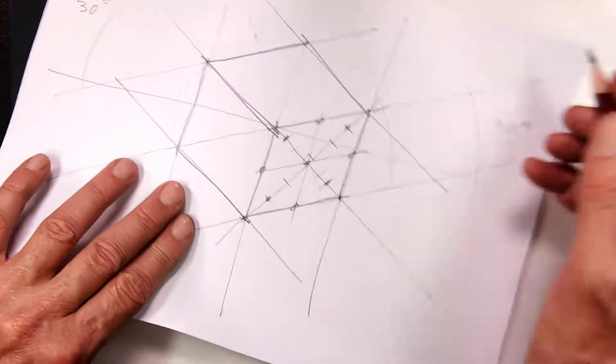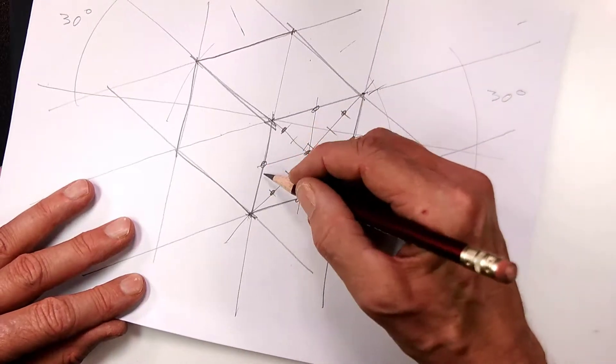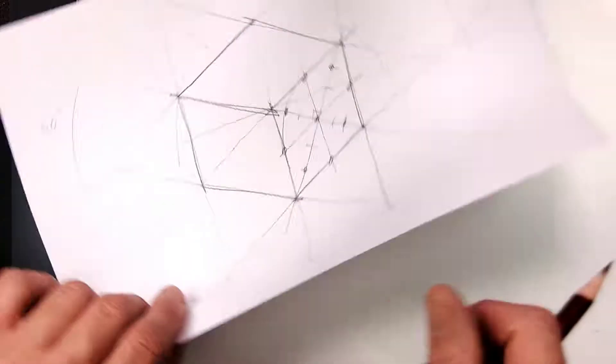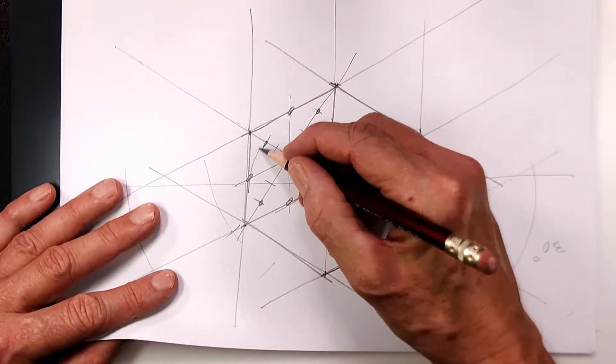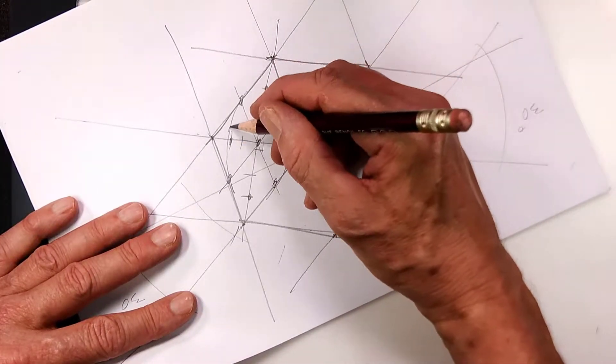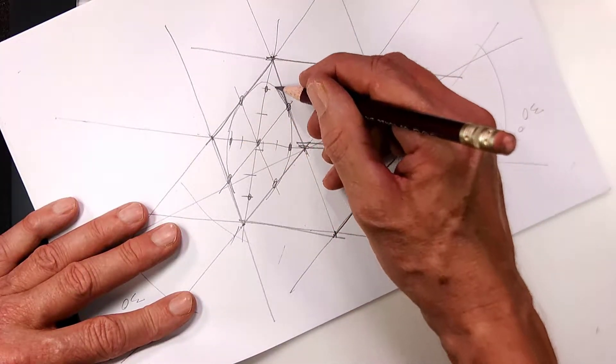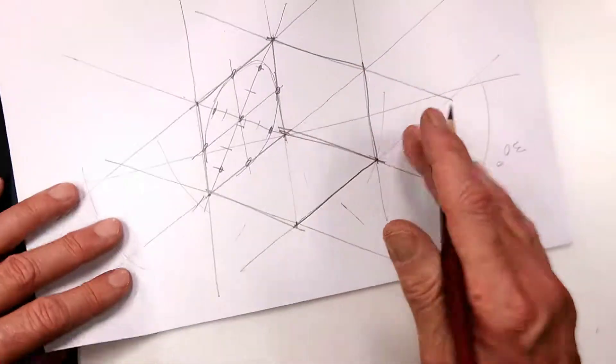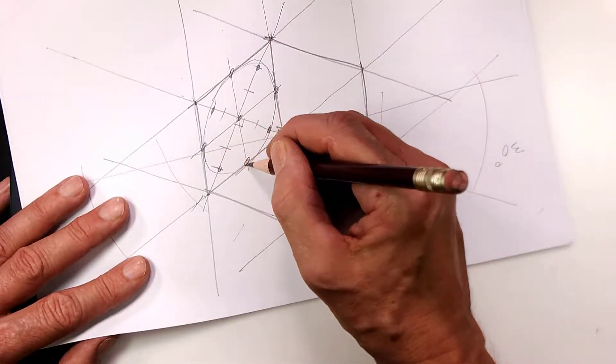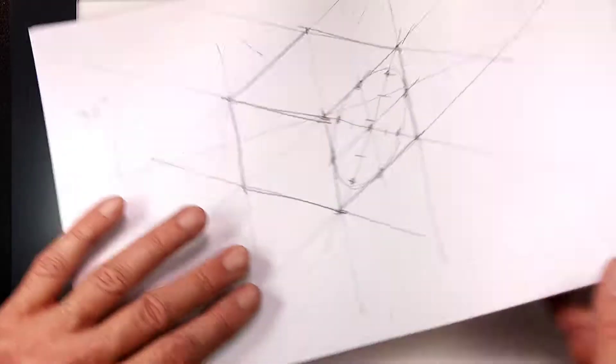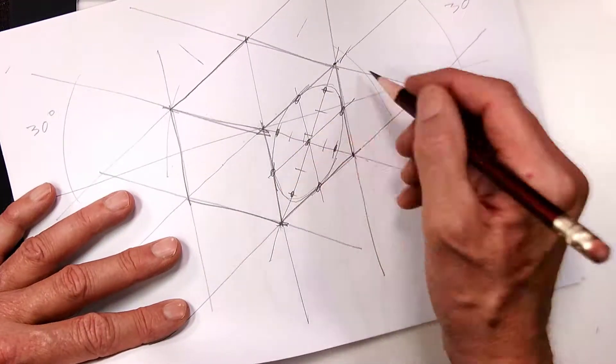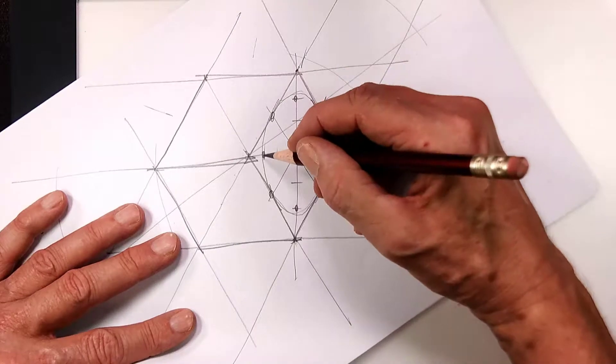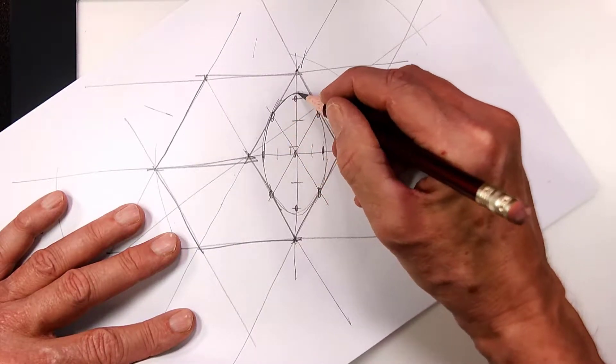Then what I do is I then lightly sketch along the long arc, the two ends like this. And then also I come like this. Now the ellipse does not have to go exactly through this point, but it's just an estimate of where it should go. Now what I'm going to do is darken the ellipse and go like that.